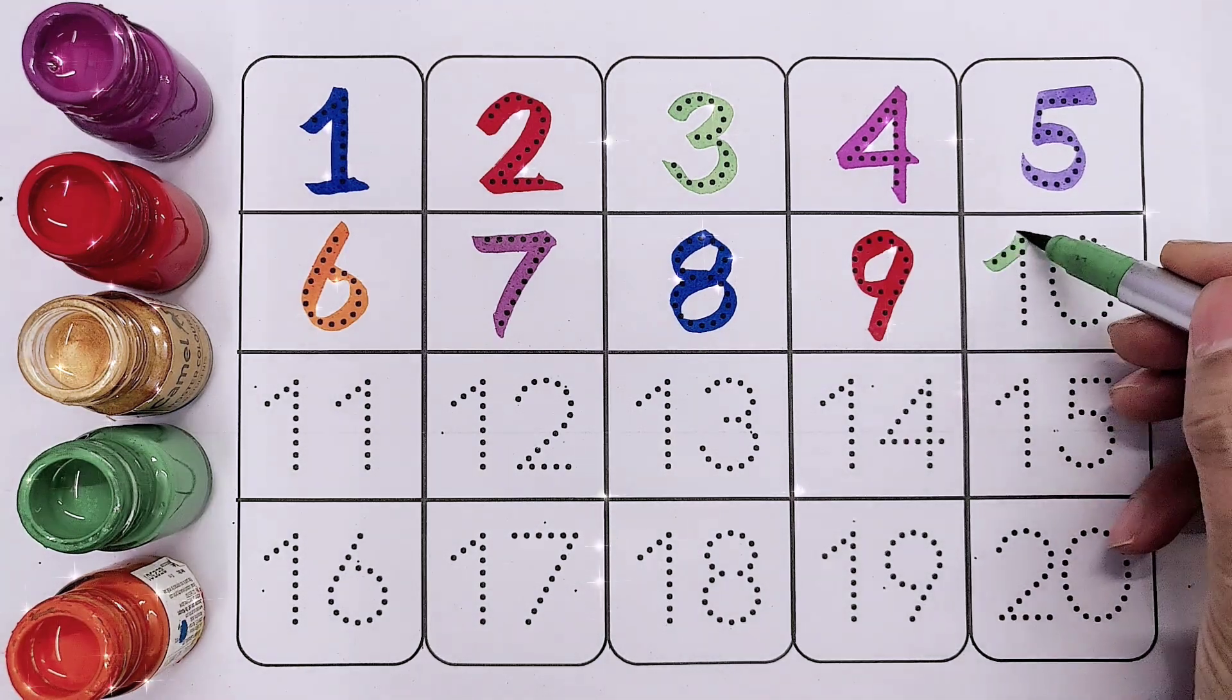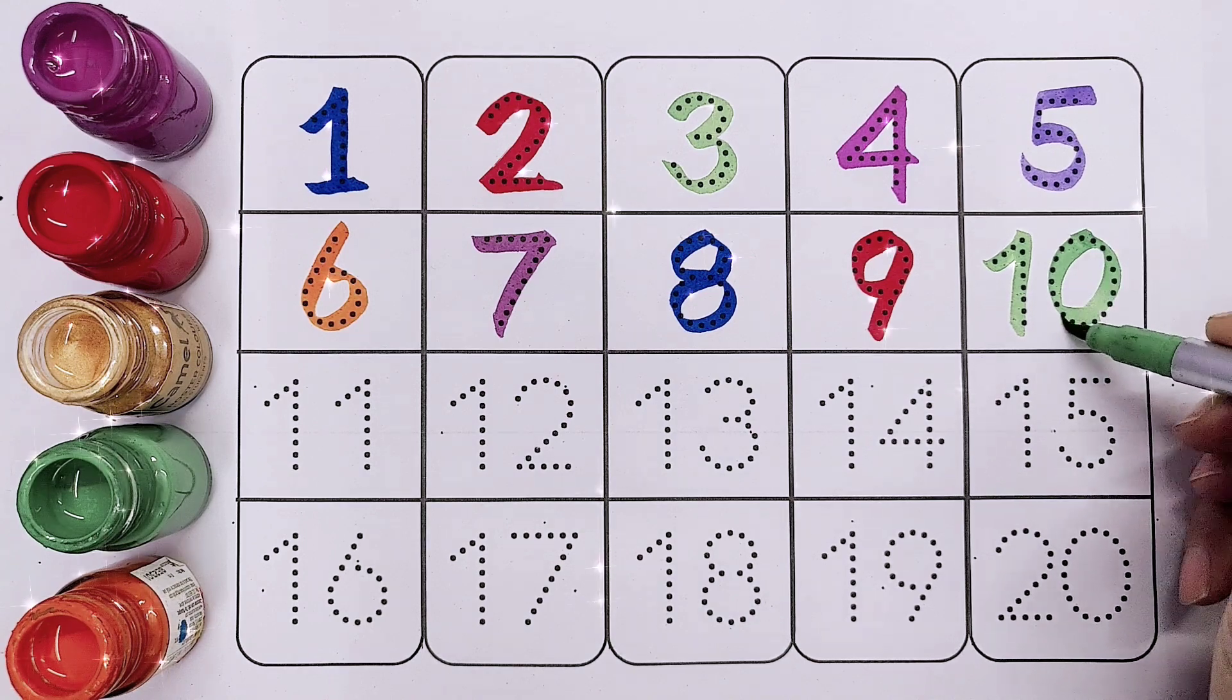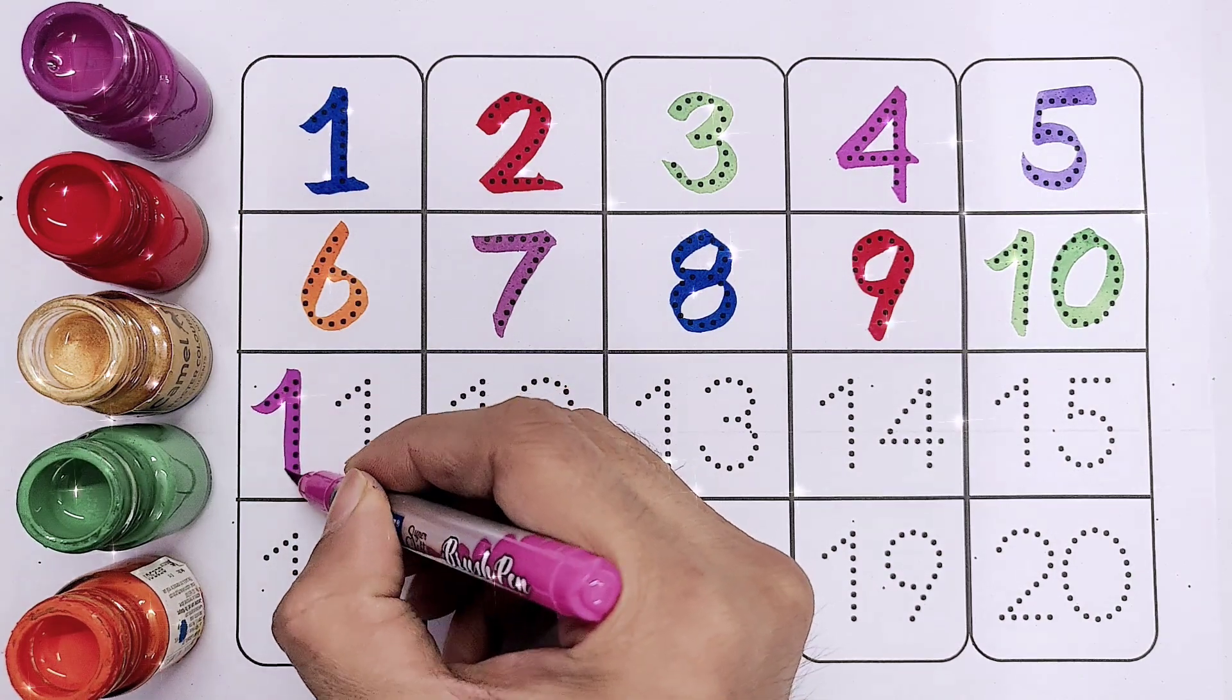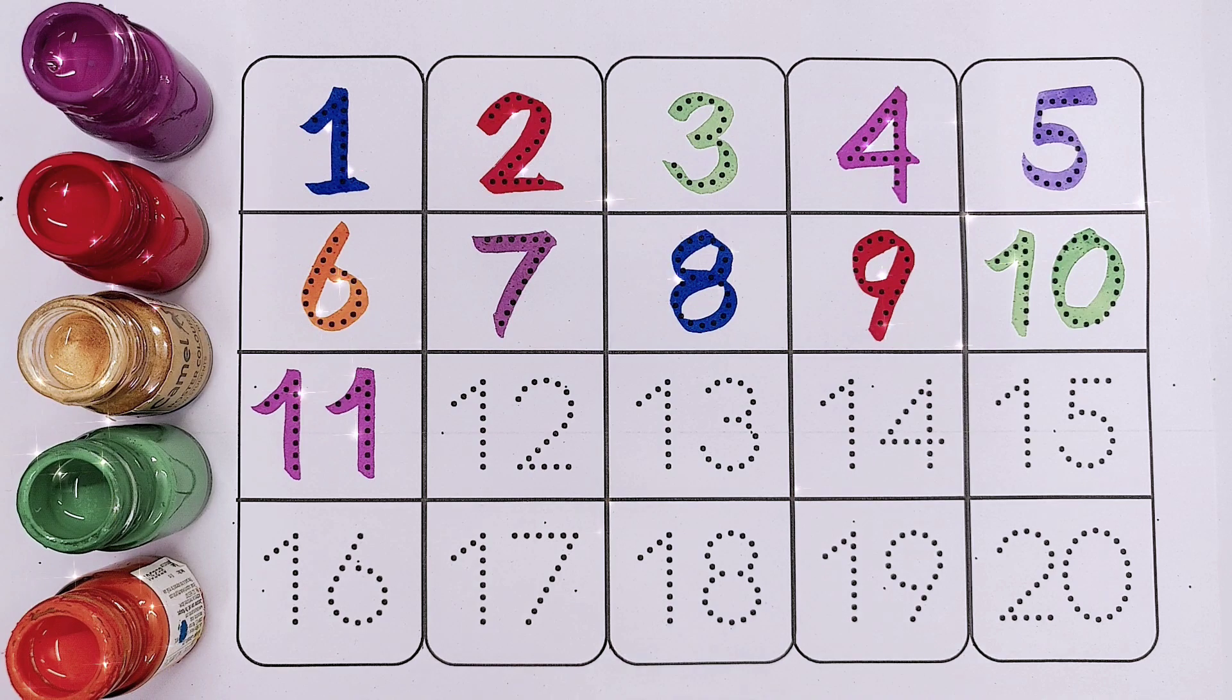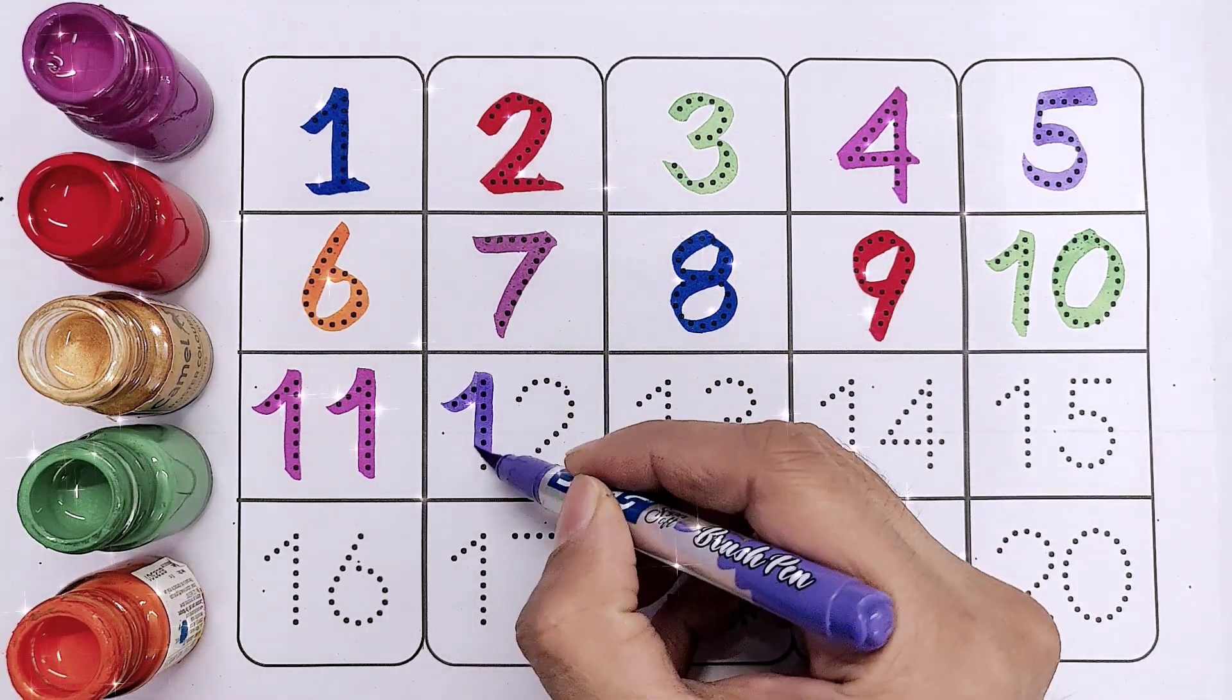Nine, number nine. Ten, ten. Eleven, it's eleven. Twelve kids, twelve.